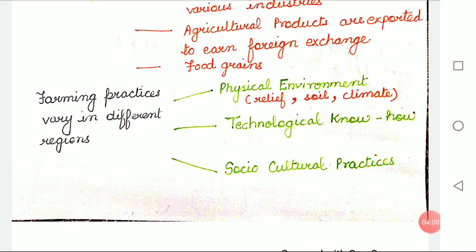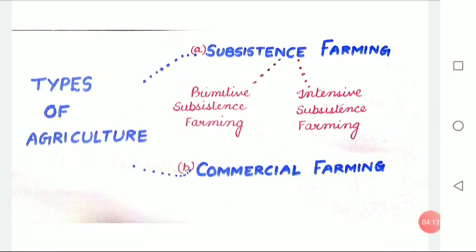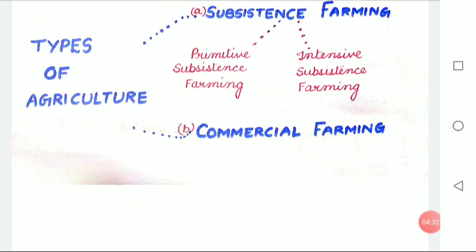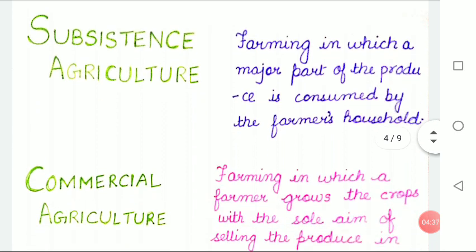Now we are going to discuss the types of agriculture. They are of two types: subsistence farming and commercial agriculture. Subsistence farming is divided into two types: primitive subsistence farming and intensive subsistence farming. Subsistence agriculture, or subsistence farming, is farming in which a major part of the produce is consumed by the farmer's household — basically the produce is meant for the family and they don't produce for selling in the market.